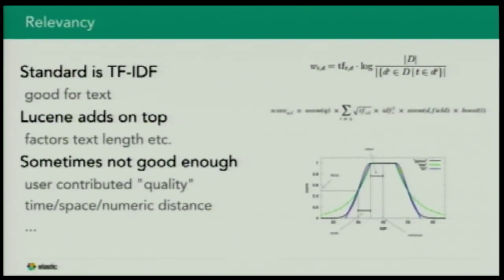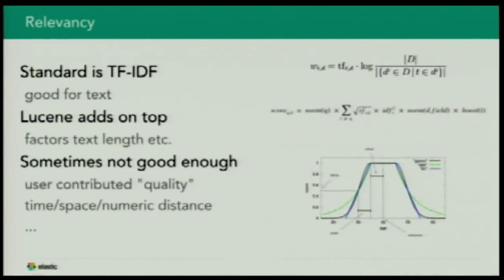But sometimes even that is not enough. For example, you're not dealing with text but with numerical information, or you have additional information Elasticsearch isn't aware of — like the quality of a document, a user-contributed value, a paid promotion, or you want to penalize or favor things based on distance from a geolocation or a numerical range. We have a few ways of expressing that, and the best way to show it is with an example.